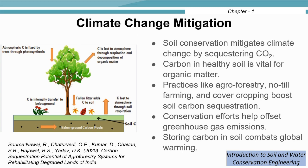Soil conservation measures can help in mitigating climate change by sequestering carbon dioxide — capturing and storing it to prevent its release into the atmosphere. This is a key component of carbon capture and storage technologies. Practices like agroforestry, no-till farming, and cover cropping will increase soil carbon sequestration. Conservation efforts help offset greenhouse gas emissions, and by storing carbon in soil we can combat global warming.